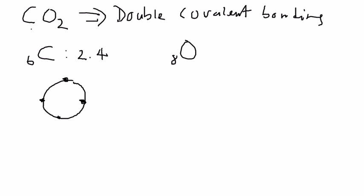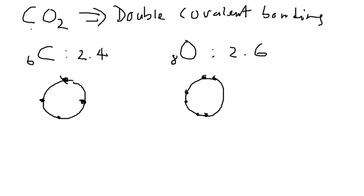For oxygen, there are eight protons, so the electronic configuration is 2, 6 — meaning at the outermost layer there are six electrons: two, four, six. Now, in this case, there are two atoms of oxygen combined with one atom of carbon.